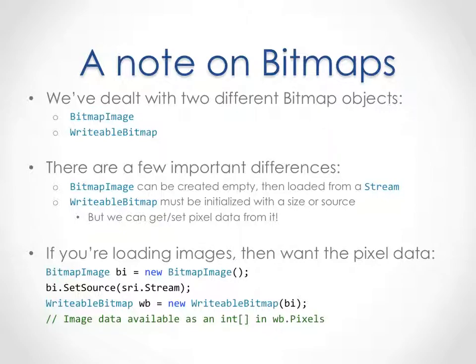You're going to be taking an image and pasting it over a certain location in the image stream. In order to do that, you have to get the raw pixel values. To get the raw pixel values, you use this writable bitmap, because it allows you to get the int array, which you can then pass to your C++ code to do the actual image processing.